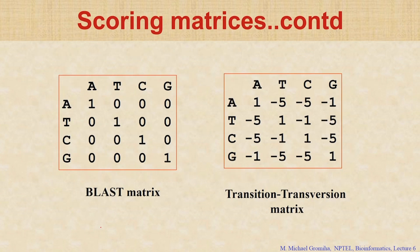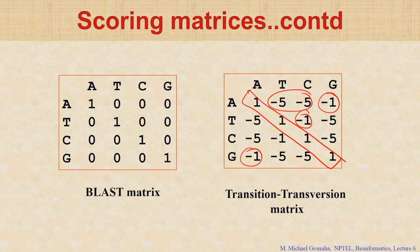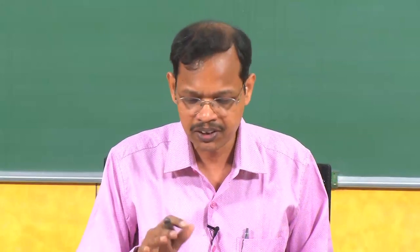These are matrices. Here we have the 4 nucleotides A, T, C, G. Earlier we used 1 for all matches. Now we change it: if it is a match score, we put 1; if it is purine to purine or pyrimidine to pyrimidine, we give minus 1; if it is the other way around — purine to pyrimidine or pyrimidine to purine — we give minus 5. If you use this score, the alignment will prefer purine-to-purine matches.